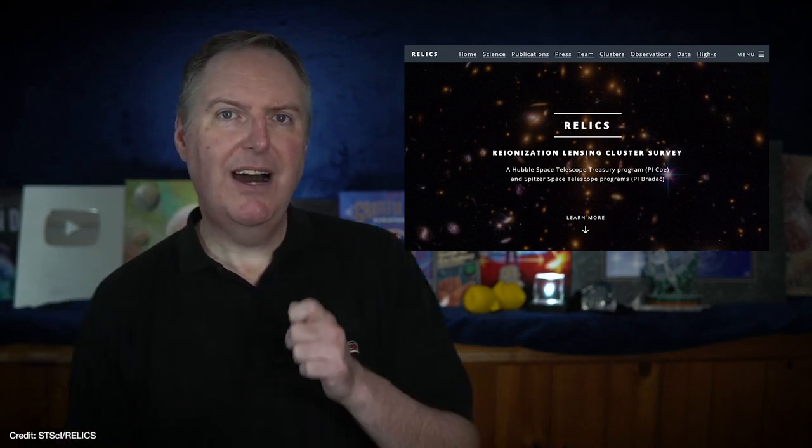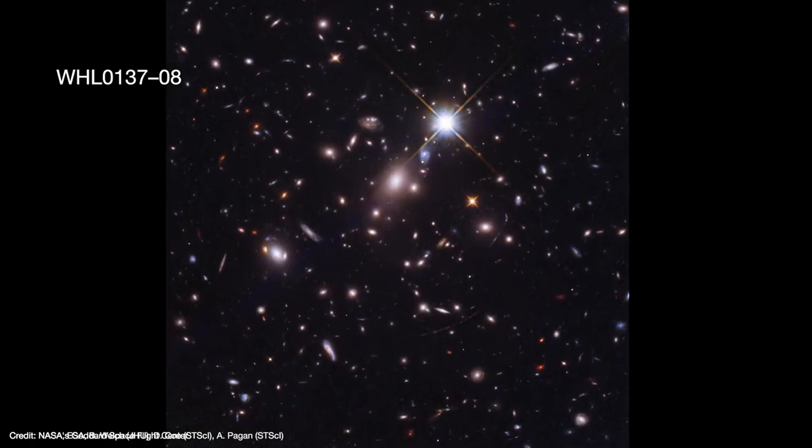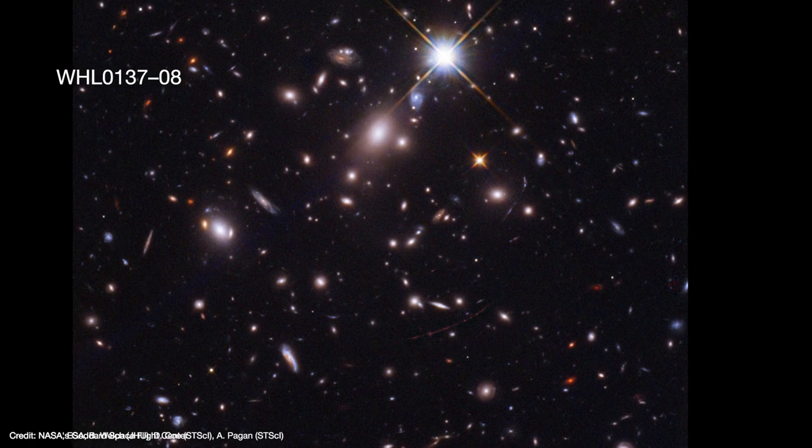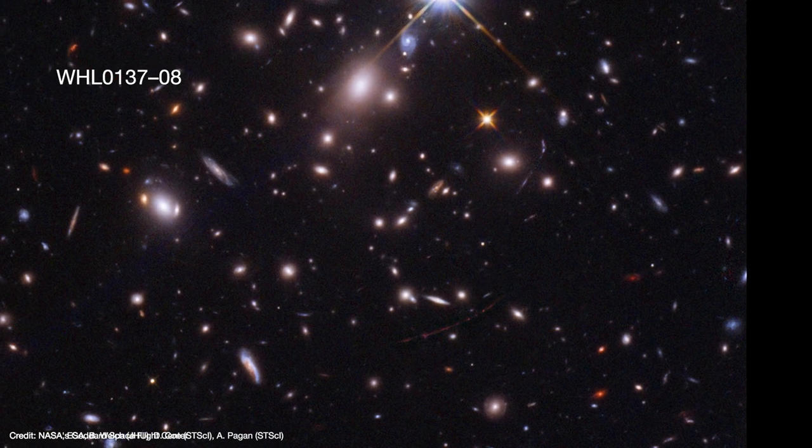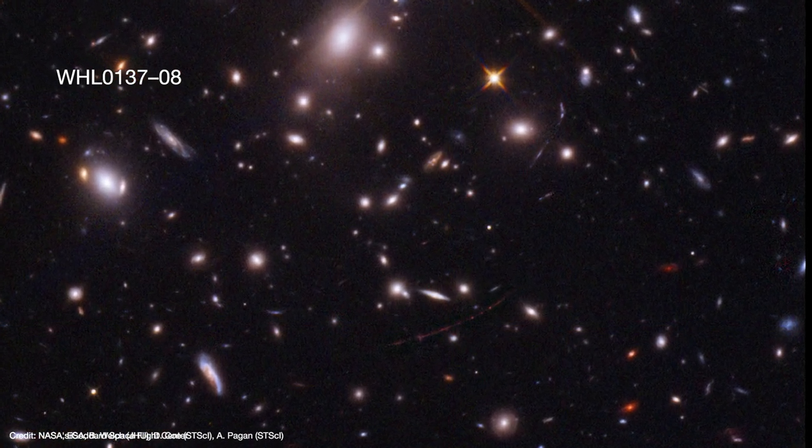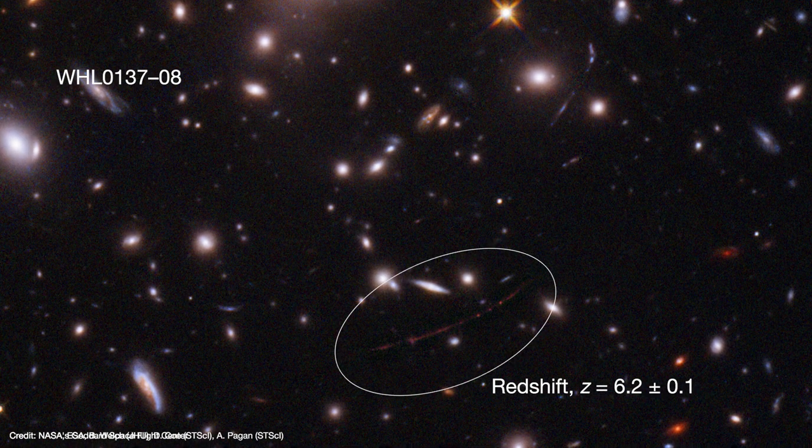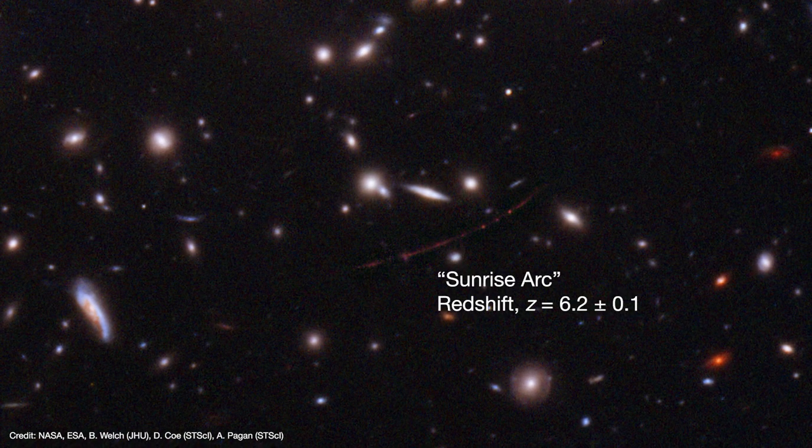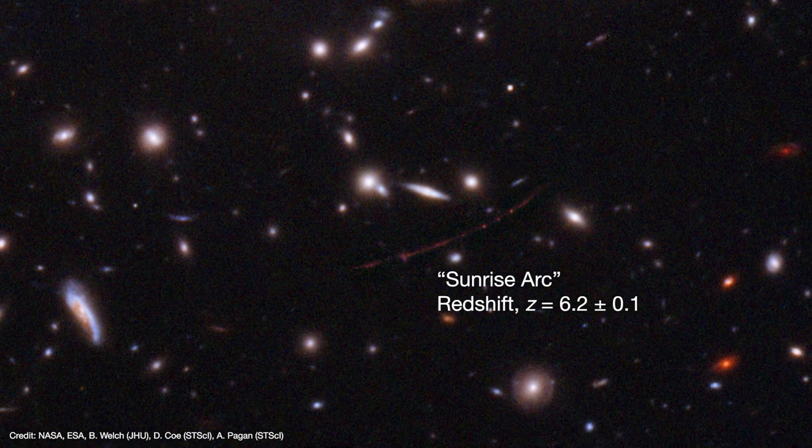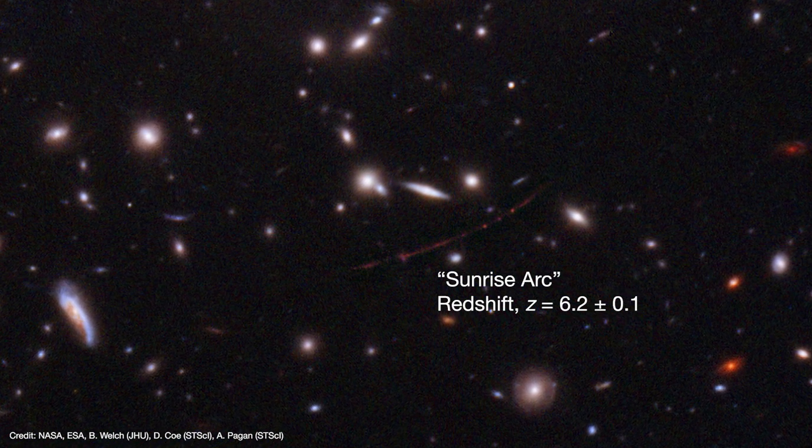In 2016, Hubble imaged one of the lensing clusters called WHL-0137-08. It happens to feature a particularly long and bright arc with a redshift of 6.2. That's a high redshift. It puts the lens galaxy at approximately 12.9 billion light years away. Or put another way, about 900 million years after the big bang. Since that puts the background galaxy close to the cosmic dawn, the RELICS team dubbed the arc the Sunrise Arc.